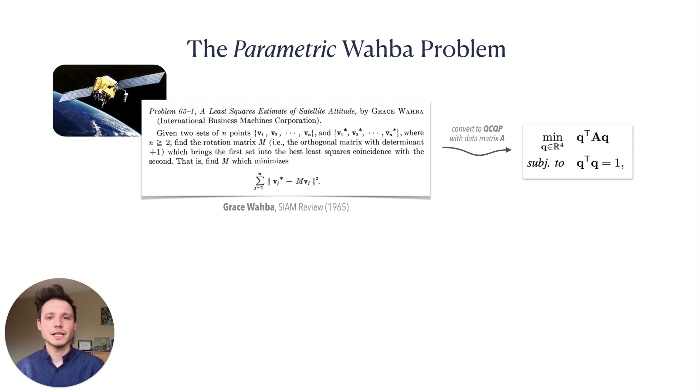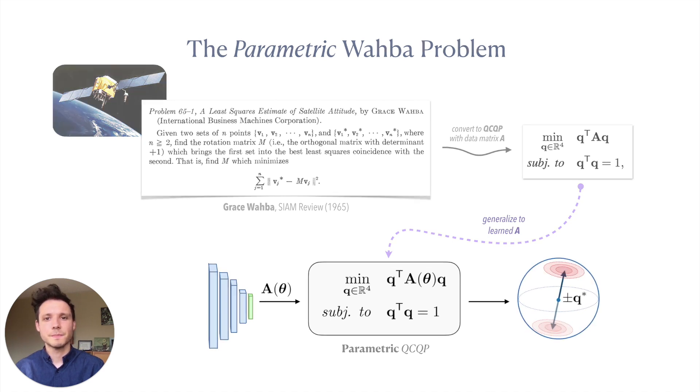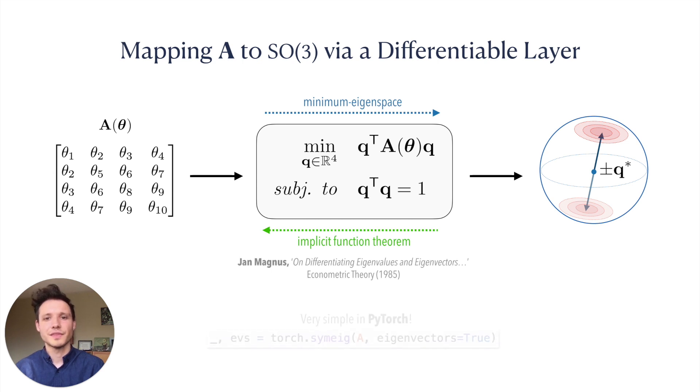This problem can be elegantly formulated as a quadratically constrained quadratic program over unit quaternions, where the data matrix A summarizes correspondences and uncertainty. We motivate our representation by generalizing the Wahba problem to a parametric form, where we use the solution of a QCQP to map a symmetric matrix to a unique SO3 element. Such a parametric QCQP admits a closed-form solution via an eigendecomposition, and an analytic gradient via application of the implicit function theorem.